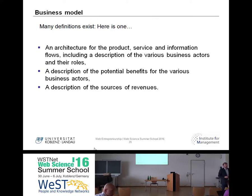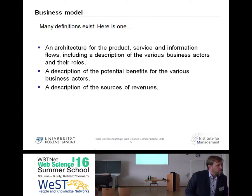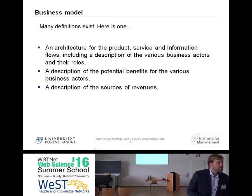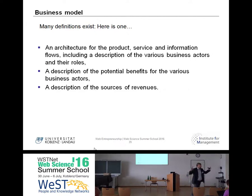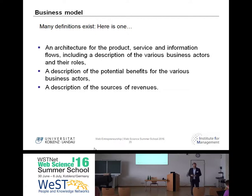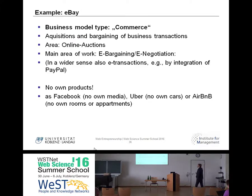In 85% of business model definitions, you will find a revenue model as a sub-part. There is one initiative by the University of St. Gallen — the so-called business model navigator. They looked at the history of all possible business models and derivations, and found 53 archetypes of different business models. Here's an example: eBay. Maybe it's getting old but it's well known. They do nothing else than acquisition and bargaining of business transactions and online auctions. They have no own products.